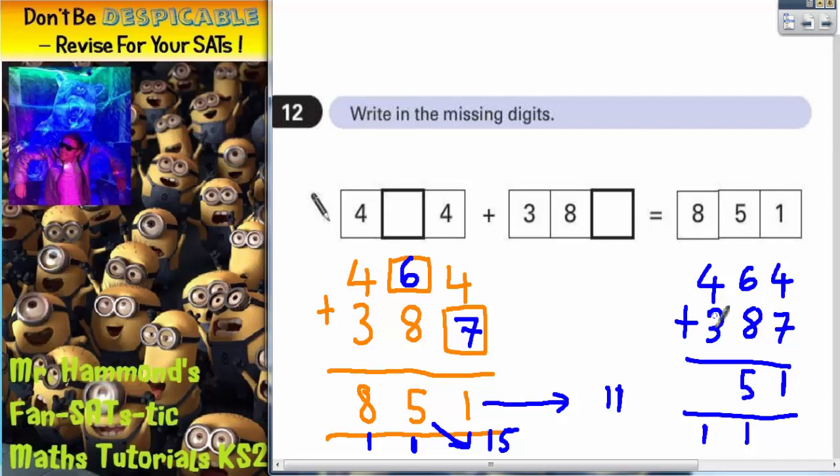Carry the one again. Four plus three is seven, plus the one is eight. So indeed we do get back to 851 which is what we want to get here.